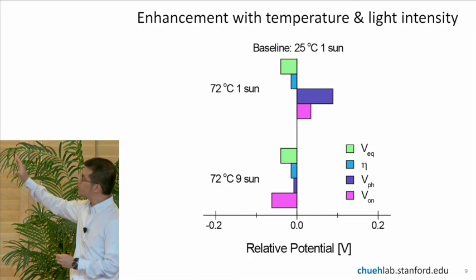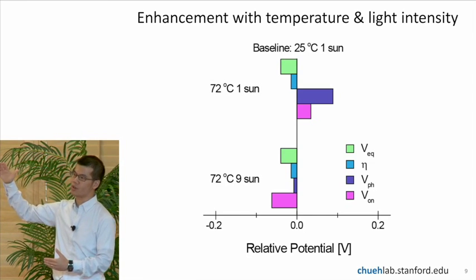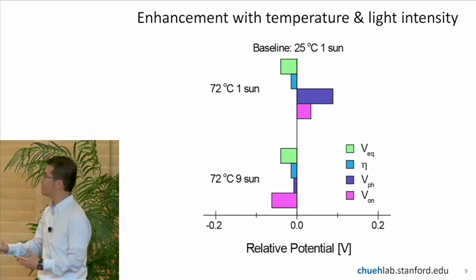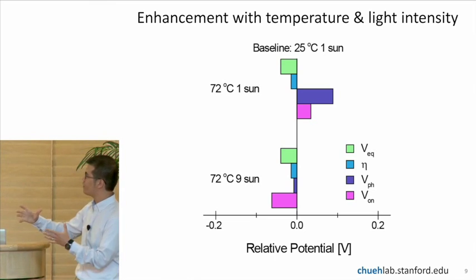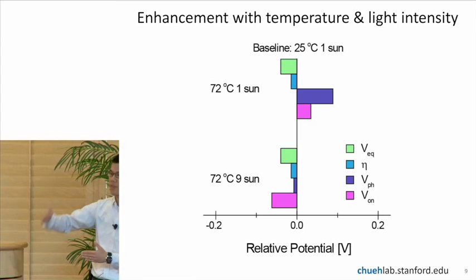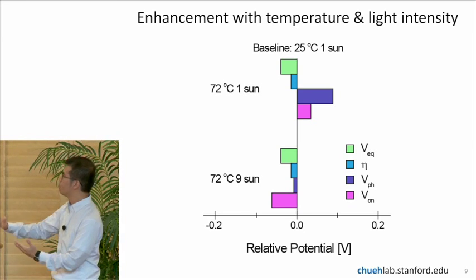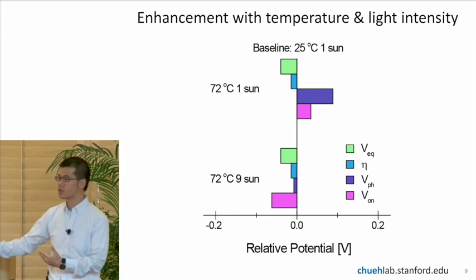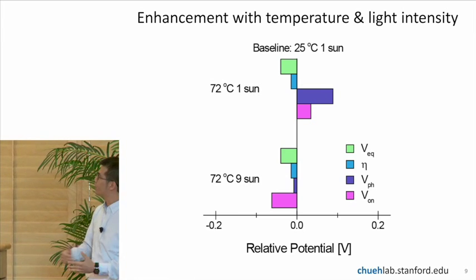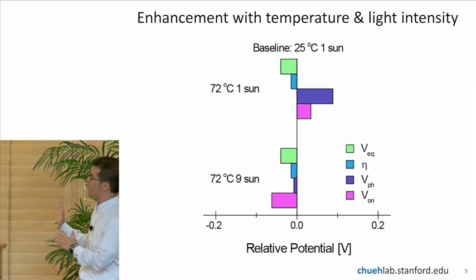As you can see on the top case, when we increase the temperature without increasing the intensity, you have a general movement to the right. So you have the so-called onset potential, this is when the current starts to take off. It's moving to higher value, so this is not good. The photo voltage is also moving to smaller values, that's not good either.